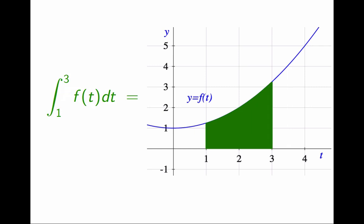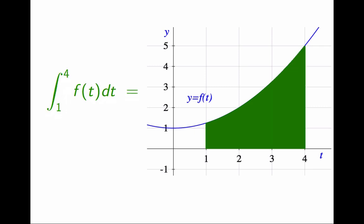More specifically, this quantity, the integral from 1 to 2 of f, I am going to call it big F(2). This quantity, the integral from 1 to 3 of f, I am going to call it big F(3). And this quantity, the integral from 1 to 4 of f, I am going to call it big F(4).